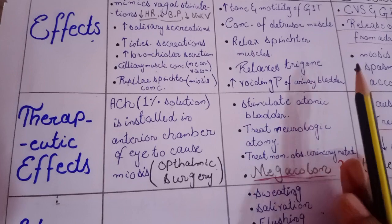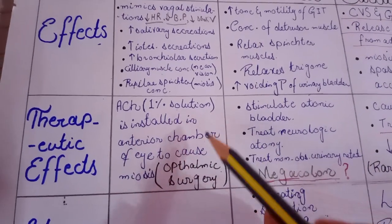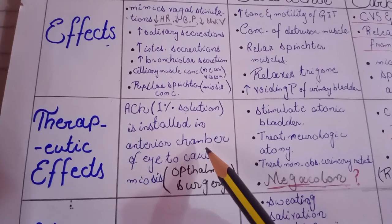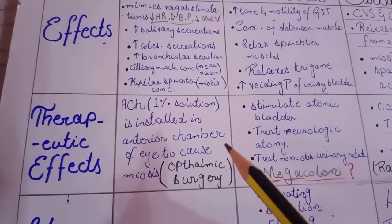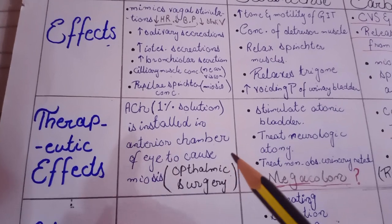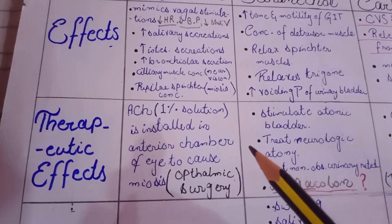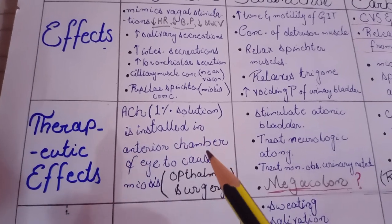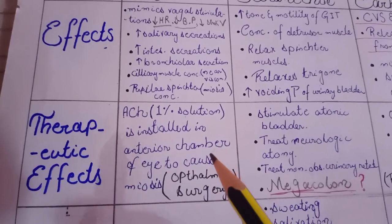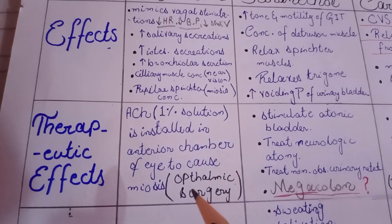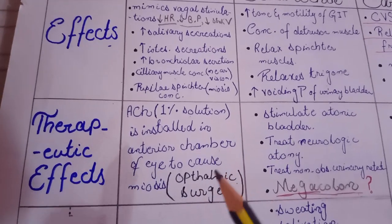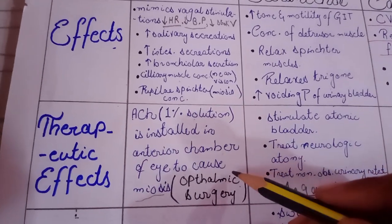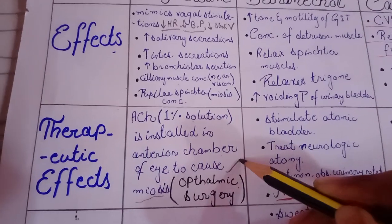However, acetylcholine in 1% solution can be instilled into the anterior chamber. In the anterior chamber we have the iris, so when it is instilled into the anterior chamber, it causes contraction of the iris sphincter muscle. As a result, it causes constriction of the pupil and results in miosis. This process is highly helpful in the case of ophthalmic surgery.